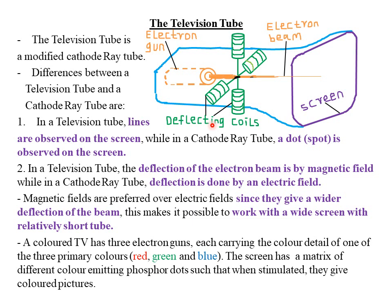The main difference lies in the deflection system. For a cathode ray tube, there are X plates and Y plates responsible for horizontal and vertical deflection of the beam. For a television tube, it has deflecting coils responsible for horizontal and vertical deflection of the electron beam. One of the coils could be a north pole and the other a south pole, responsible for horizontal deflection, and similarly for vertical deflecting coils.